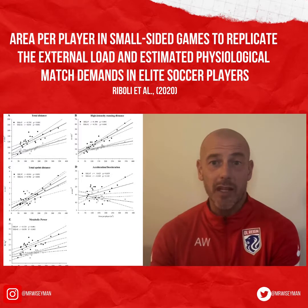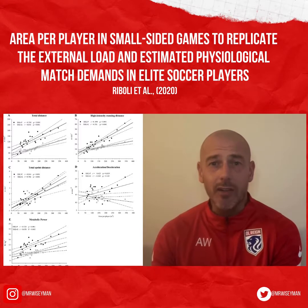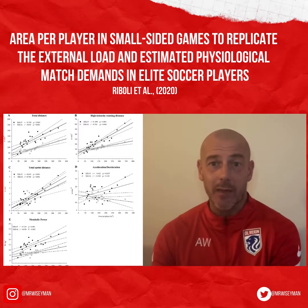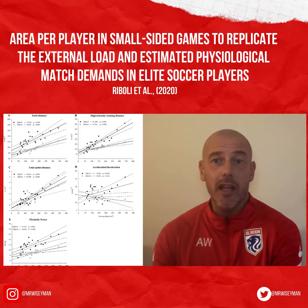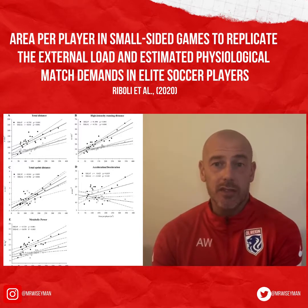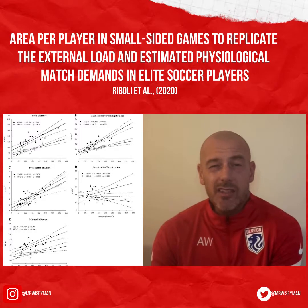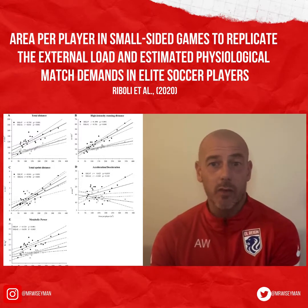For this research, participating goalkeepers were not included in the calculation of the area per player. However, a key finding was that when goalkeepers are included in small sided games, the area per player needs to be increased to replicate game demands. One novel finding is that the higher the playing area per player, the higher the speed threshold. If the area per player is increased, it is likely that total distance, total high intensity running and total sprint distance will all increase too, therefore increasing the demands on the player. In essence, the bigger the space per player, the higher the locomotor demands.